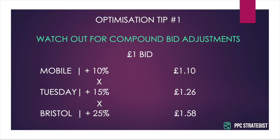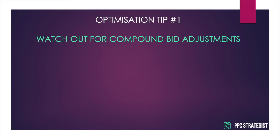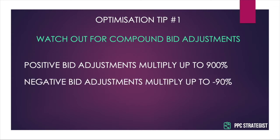Once you add in gender, age, and audience adjustments, which we'll be looking at in the next unit, you can quickly find yourself bidding way more than you ever intended to. There is a limit to how much bid adjustments can multiply and deviate from the base bid, but that limit is 900% — at that point it's no longer an adjustment, it's in a completely different ballpark. The lower limit when making bid reductions is minus 90%. So when making a bid adjustment, keep in mind what existing adjustments are already in place and use smaller percentage changes if there are multiple adjustments affecting the same set of keywords.